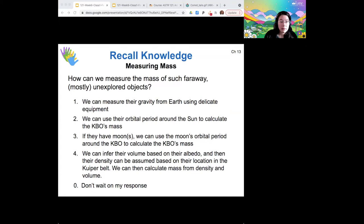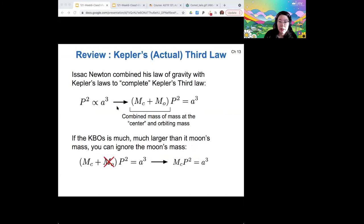All right. So the most solid way to calculate the KBO's mass would be to measure the orbital period of a moon. So for those of you who chose number two, yes, orbital periods are helpful, but let's return to our Kepler's third law, Newton's version. So the modified version of Kepler's third law—the mass that we calculate using Kepler's modified third law is the combined mass of the mass at the center of the orbit and the orbiting mass.